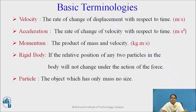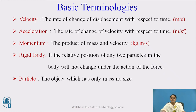A rigid body is one in which the position of the particles will not change after the application of any external force. A particle is any object which has only mass — it does not have any specific shape or specific size. These are the basic terminologies used in engineering mechanics.